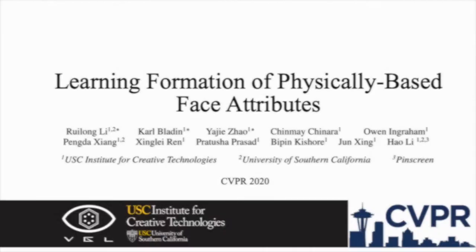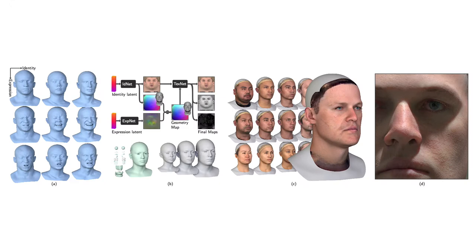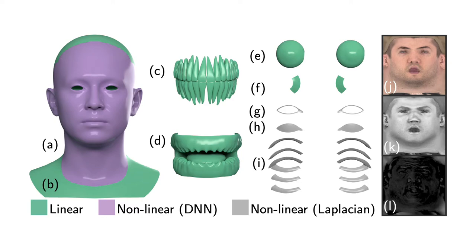We introduce a GAN-based 3D morphable face model that enables prediction, inference and generation of 3D faces with a previously unseen set of anatomical features and physically-based material intrinsics, based on 4K resolution textures for albedo, specular intensity and geometric displacement maps.